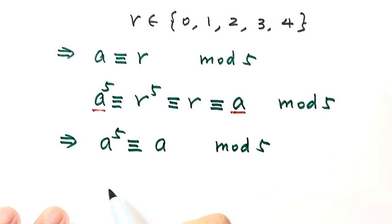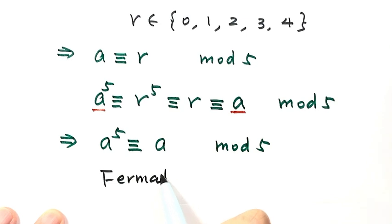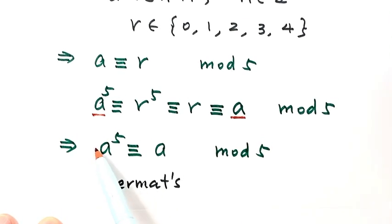So then this is the famous Fermat's Little Theorem. Okay, so we're going to use this result to solve our question.